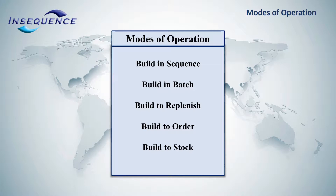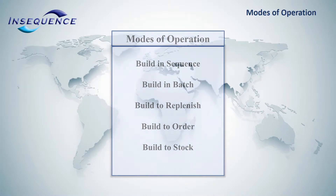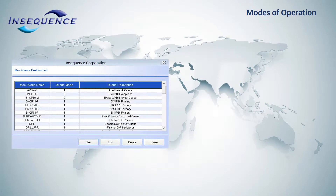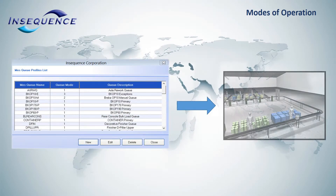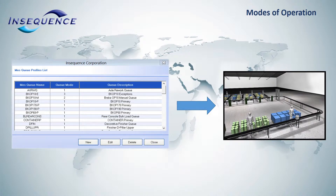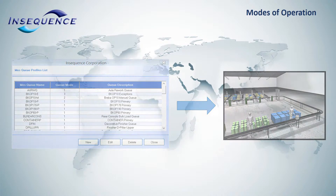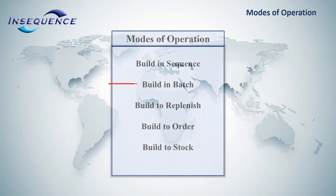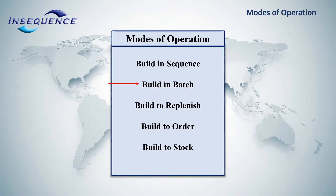Build-in-sequence is the most common mode of operation performed in customers' facilities. This mode drives data received in a broadcast or ILVS file directly into production for true build-in-sequence manufacturing. Build-in-batch mode allows the supplier to build variable-sized batches defined by the user.